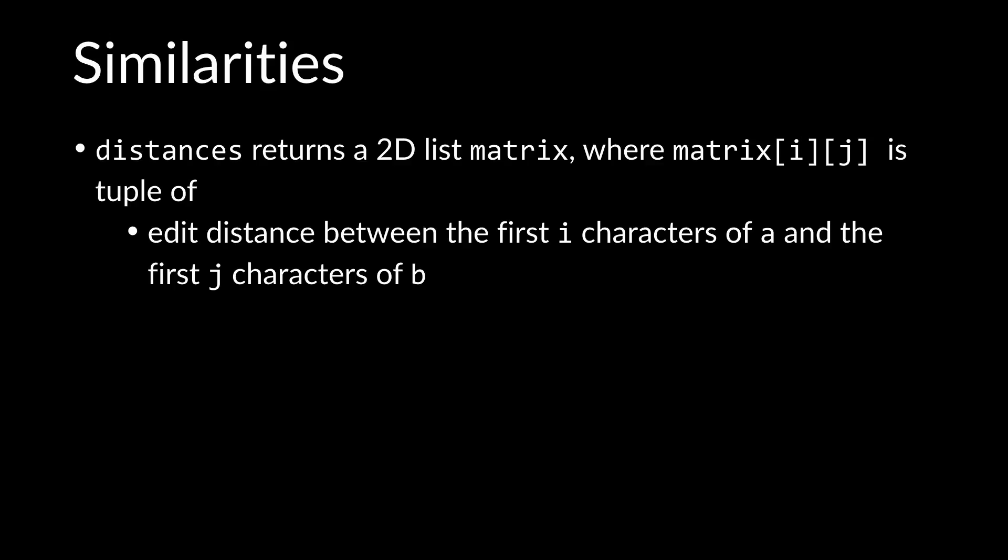Here's what you'll have to do. First, you'll implement a function called distances, which will return a 2D list or a matrix, where matrix in row i and column j is going to be a tuple, just an encapsulation of multiple values, where the first value in the tuple is the edit distance between the first i characters of your first string, which we'll call a, and the first j characters of your second string, which we'll call b.